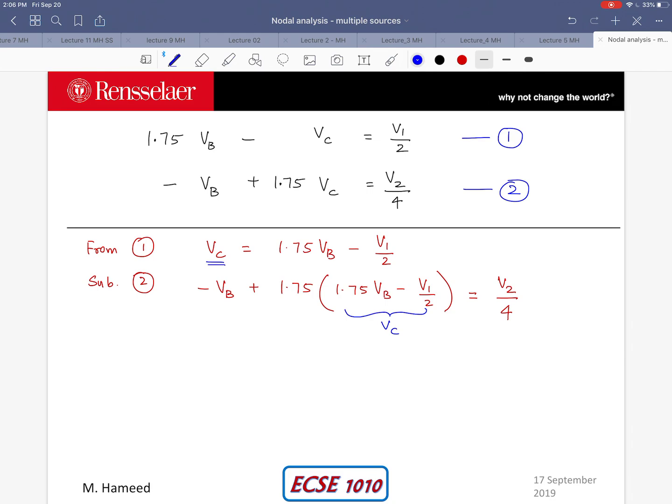Now if I rearrange this equation I have negative VB plus 3.0625 VB minus 0.875 V1 equals V2 divided by 4, and further simplification gives me VB equals 0.424 V1 plus 0.121 V2.